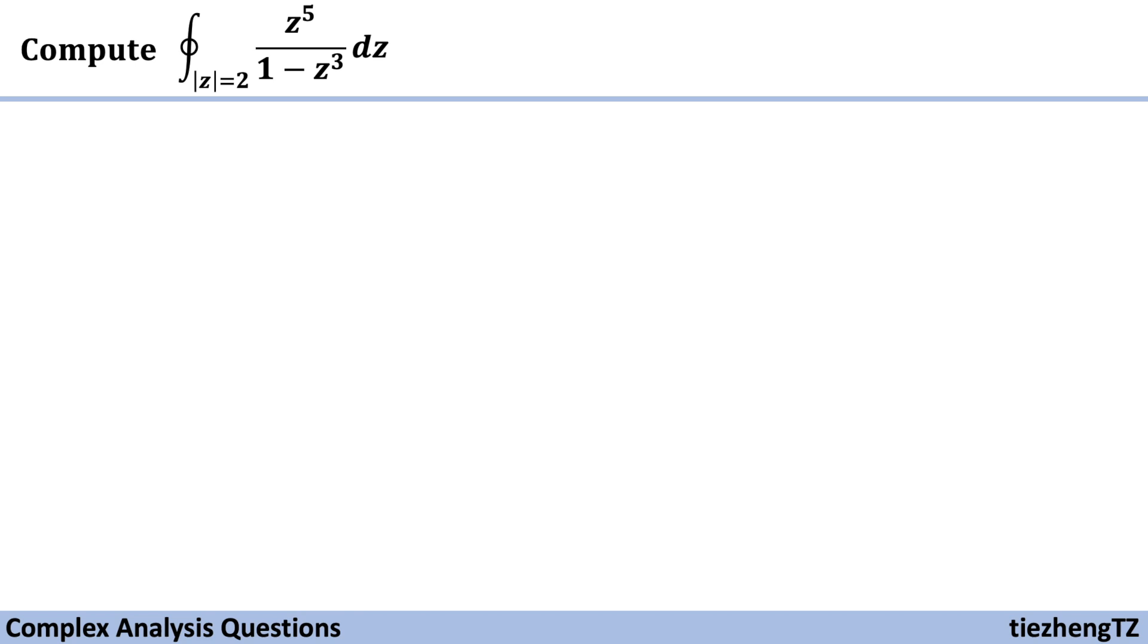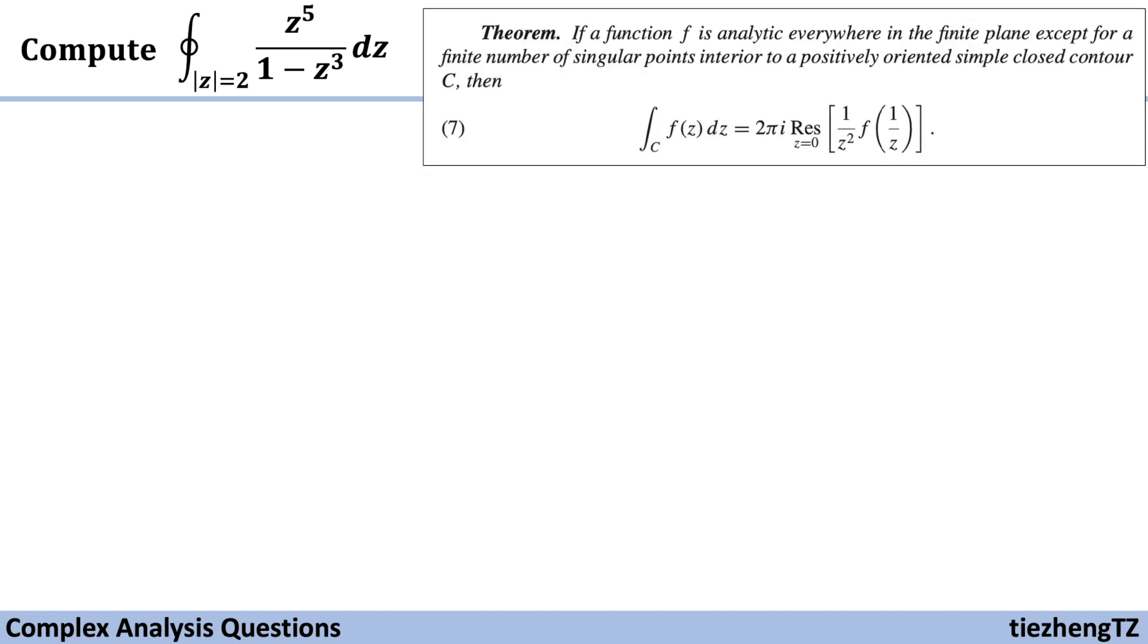When we started the concepts of residue and pole, we learned a theorem like this: If a function f is analytic everywhere in the finite plane except for a finite number of singular points interior to a positively oriented simple closed contour C, then the integral of f(z) dz equals 2πi times the residue of 1/z² times f(1/z).